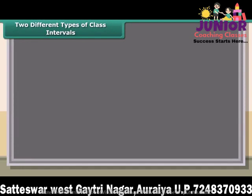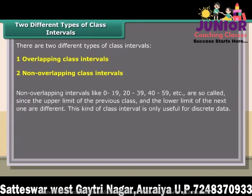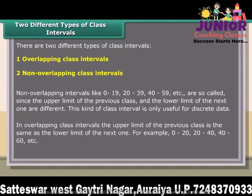There are two different types of class intervals: overlapping class intervals and non-overlapping class intervals. Non-overlapping intervals like 0 to 19, 20 to 39, 40 to 59, etc. are so-called since the upper limit of the previous class and the lower limit of the next one are different. This kind of class interval is only useful for discrete data. In overlapping class intervals, the upper limit of the previous class is the same as the lower limit of the next one, for example 0 to 20, 40 to 60, etc.